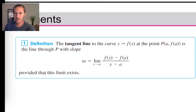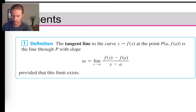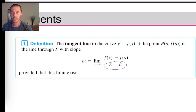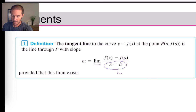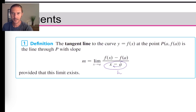Getting even closer to using h: x minus a represents the difference in the two x-coordinates, which is what brings points P and Q really close together. That x minus a is our h value. As a gets really close to x numerically, x minus a approaches zero — so we say h is approaching zero.